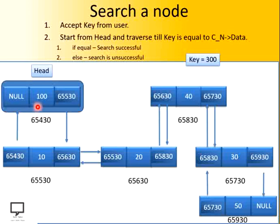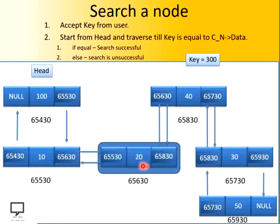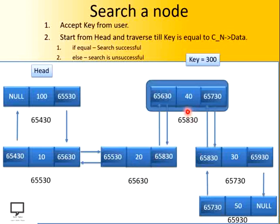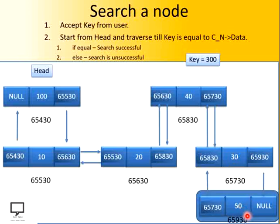Let's start with the head node: is 100 equal to key value 300? No. Let's move forward: 10 is not equal to 300. Move forward: 20 is not equal to 300. Move forward: 40 is not equal to 300. Move forward: 30 is also not equal to 300. Move forward: 50 is also not equal to 300. Now we are at the end of the list because the next field of the current node is null.